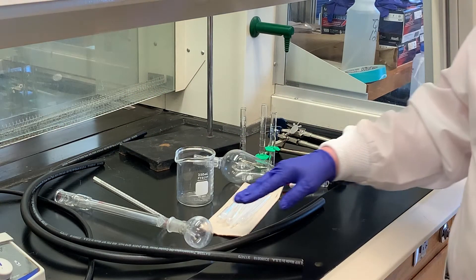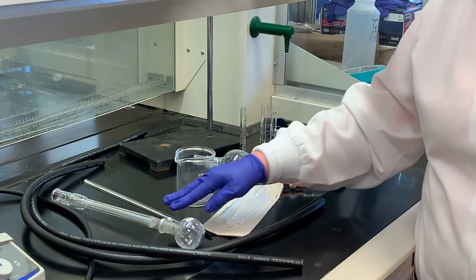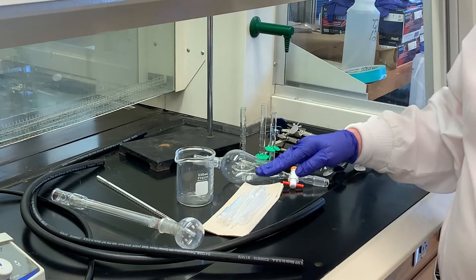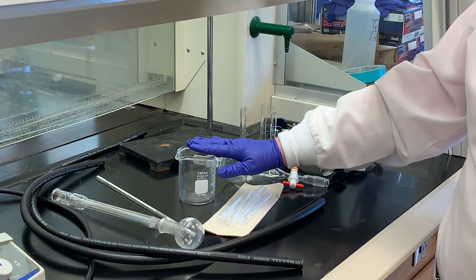The equipment you'll need is a 25 milliliter round bottom flask, condenser, stir bar for the round bottom flask, and thermometer. Our heat source today is going to be a water bath again, so we're going to use a beaker for that.